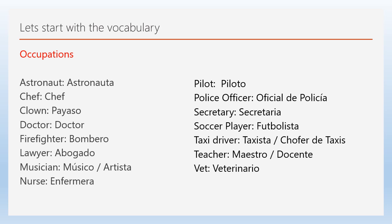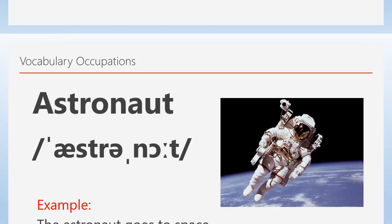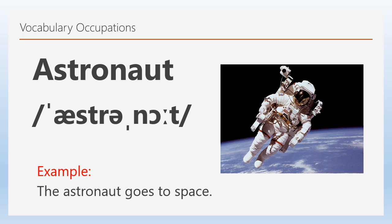Okay. Now we're going to go through each word, see how it's pronounced and what it means according to the illustration. Follow along with me. The first word in the vocabulary of occupations is: astronaut.